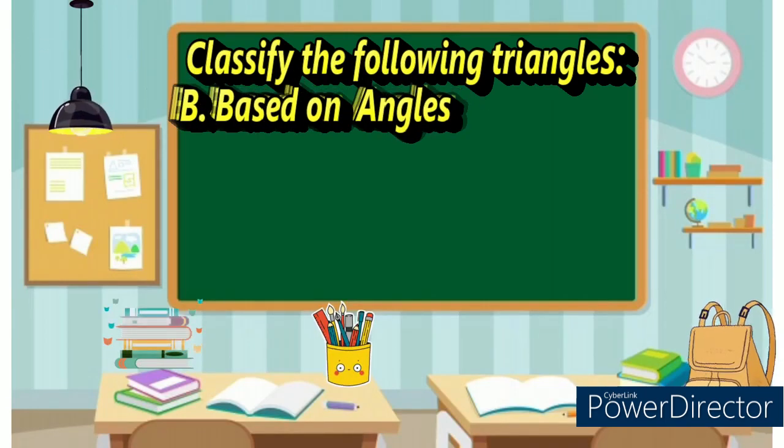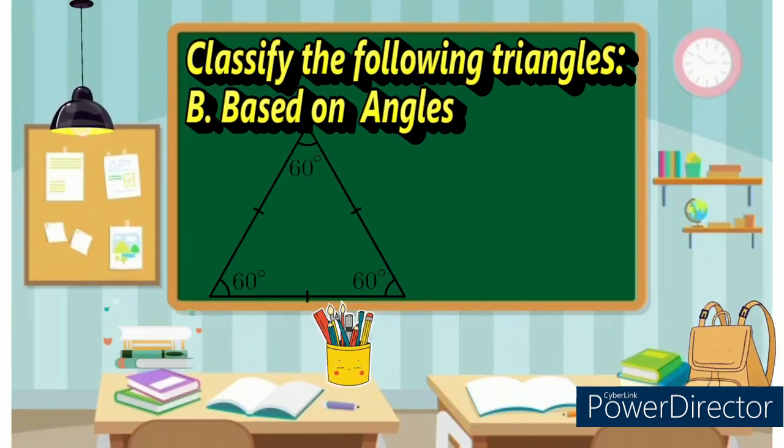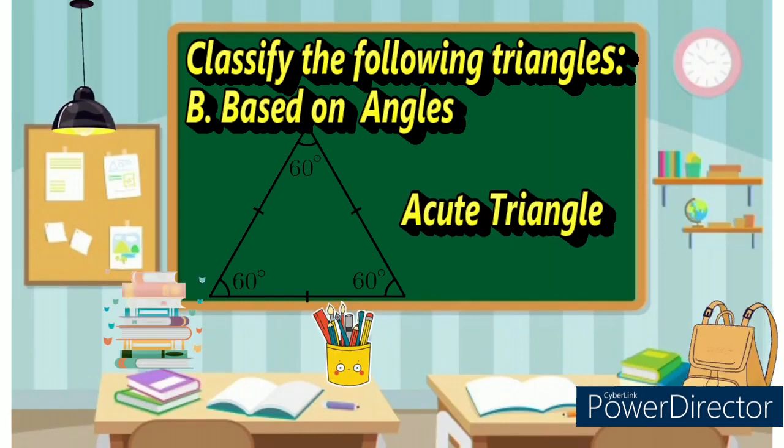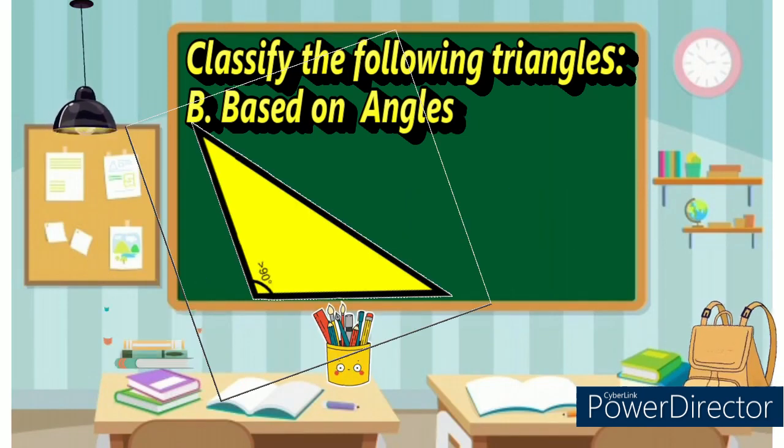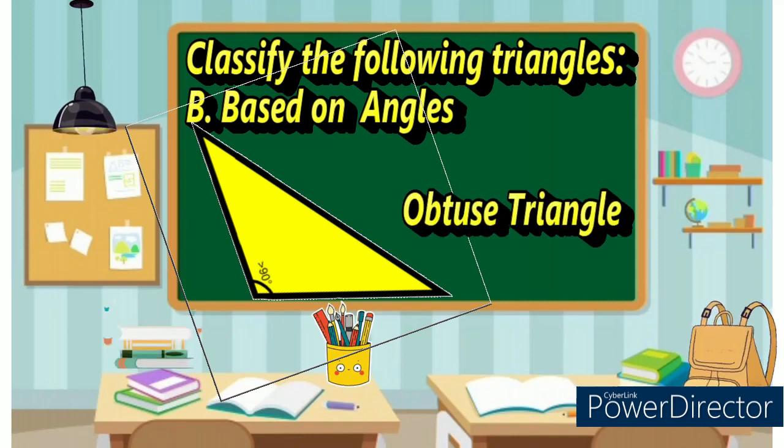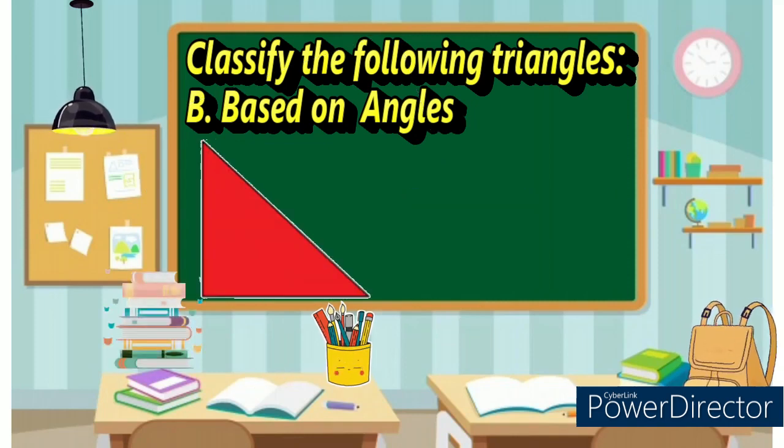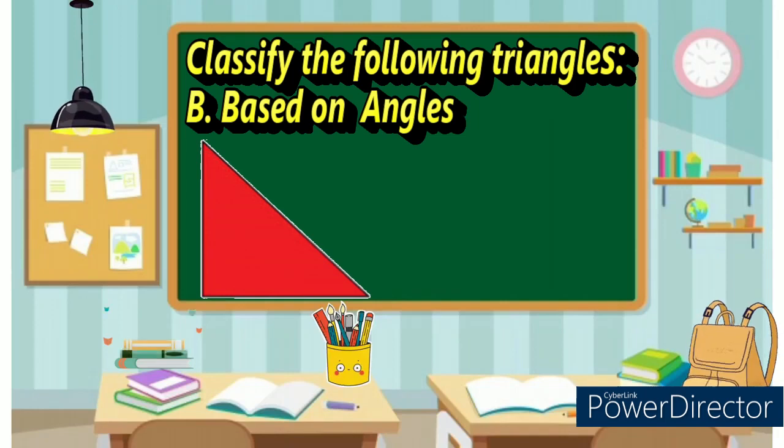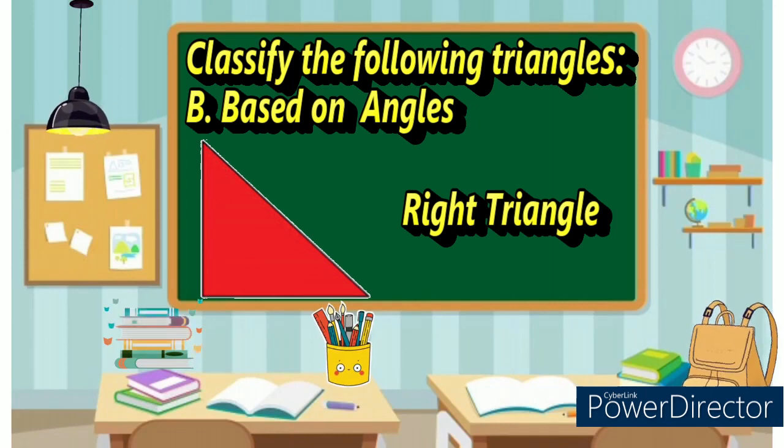Next, based on angles. Number one: acute triangle, very good. Number two: correct, obtuse triangle. Then number three: right triangle. Very good.